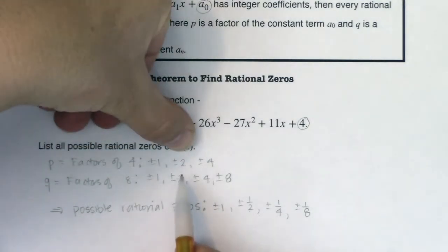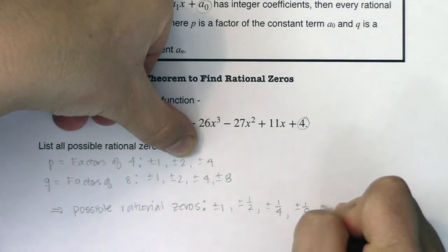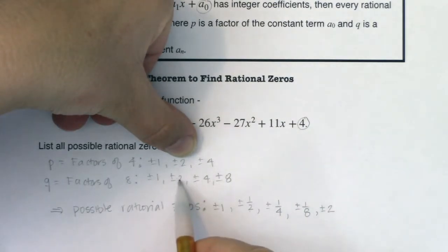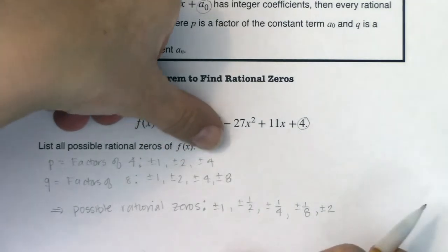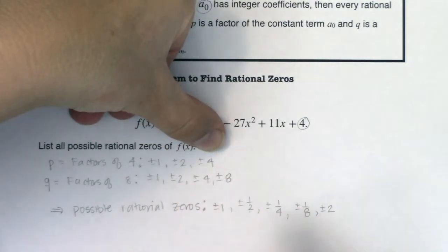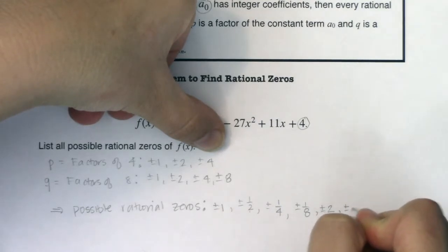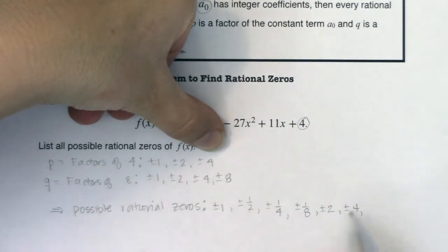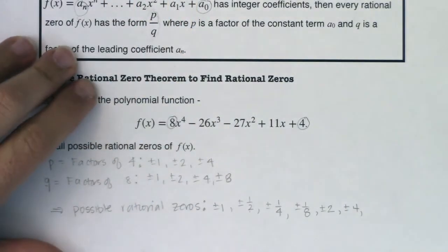I got to keep on going. Let me go over to the other p value of 2. So I would do 2 divided by 1, plus or minus 2. 2 divided by 2 is 1. I already have that in my list. And I don't need to put repeats. 2 divided by 4 is 1 half. I already have that. And 2 divided by 8 is 1 fourth. I already have it. Okay. Let's move over to 4. 4 divided by 1 is 4. That is not in my list. All right. 4 divided by 2 is 2. Got it. 4 divided by 4 is 1. Got it. 4 divided by 8 is 1 half. Got it. So that's it.